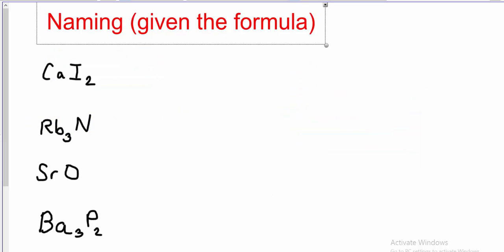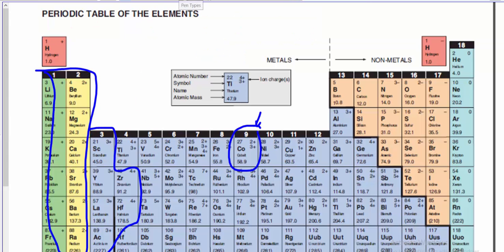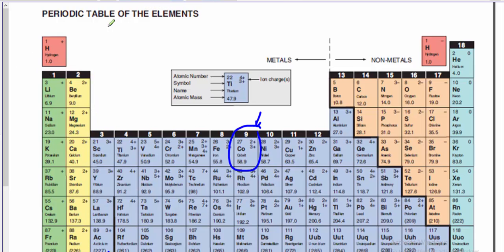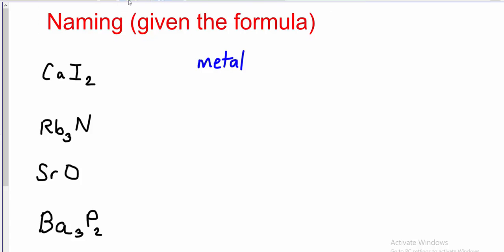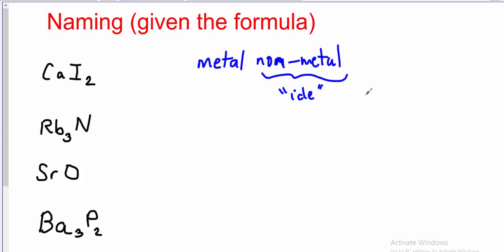Let's go ahead and start with naming ionic compounds. When we name an ionic compound, we always write the metal's name first, exactly as we see it on the periodic table. So we find the metal — for example, calcium — and we simply write calcium. The metal is named first, followed by the non-metal. The non-metal is named second, and we write it as seen on the periodic table but we change the ending of its name to -ide. By doing that, we indicate that we're talking about a compound.